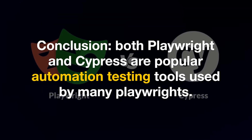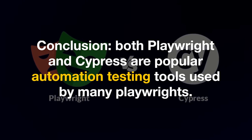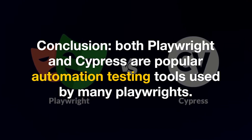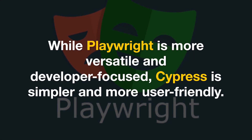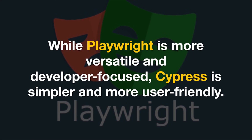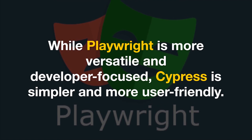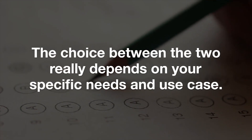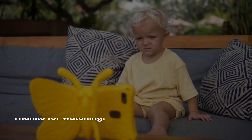In conclusion, both Playwright and Cypress are popular automation testing tools. While Playwright is more versatile and developer-focused, Cypress is simpler and more user-friendly. The choice between the two really depends on your specific needs and use case.